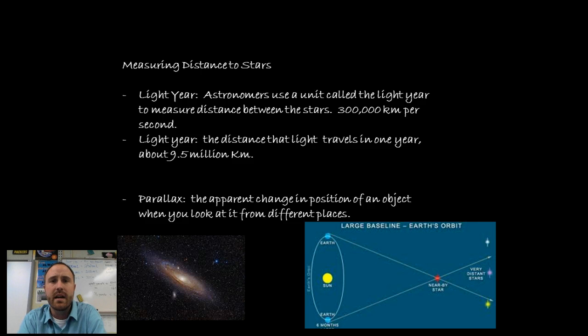To measure the distance to a star, it's such a long way away from earth that we're not really able to use kilometers to help us. So what we use is something that's called a light year. Astronomers use a unit that is light years and it's basically the distance between stars. We know that there are about 300,000 kilometers per second that light travels. A light year is the distance that light travels in one year, about 9.5 million kilometers of distance.